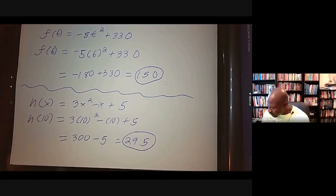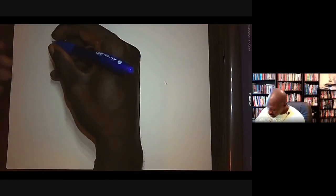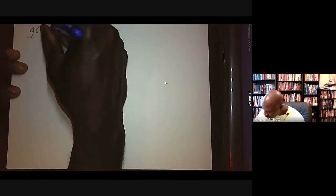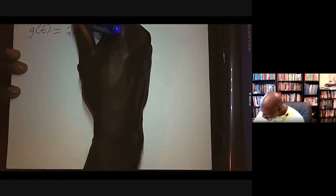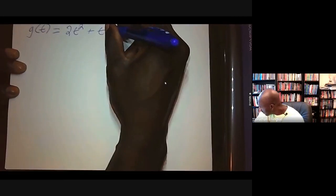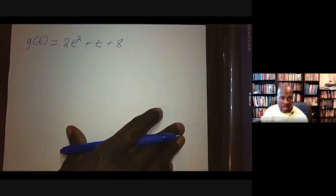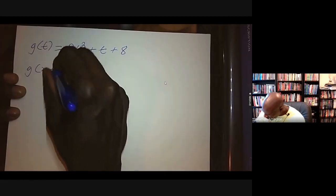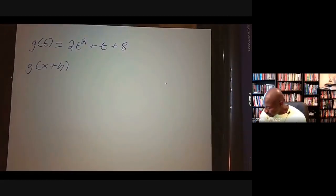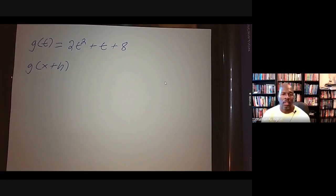Let's evaluate a function with an algebraic expression — we're just doing a review here. Say the function is g(t) = 2t² + t + 8, and we want to find g(x + h). Pause the video, try it on your own, then unpause it and watch me work out the answer to see if we agree.